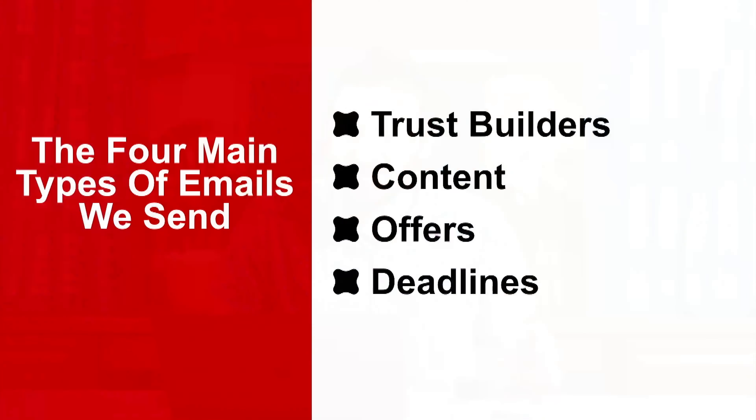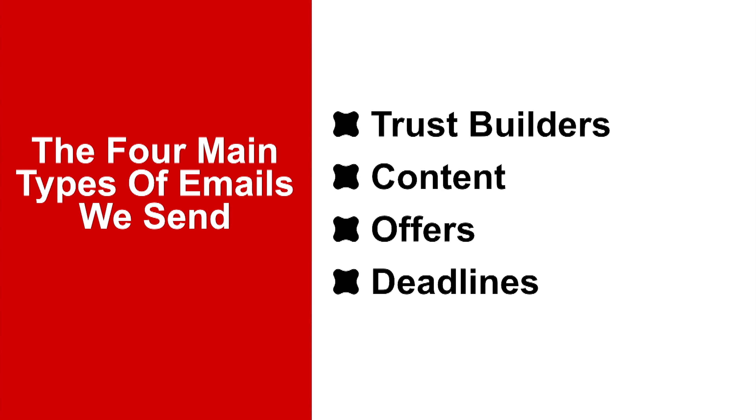The fourth type of communication is tied right into that — it's a deadline. When we make offers, oftentimes we are coupling those offers with some kind of discount and a deadline. Because in today's world, people are seeing advertisements, getting 150 emails a day on average, getting text messages, watching YouTube — they're all over the place. So if they don't have an incentive to take action, like a coupon that expires in four days, they're not going to take action. You must use deadlines. So these are the main types of emails we send: trust builders, content emails, offers, and deadlines.